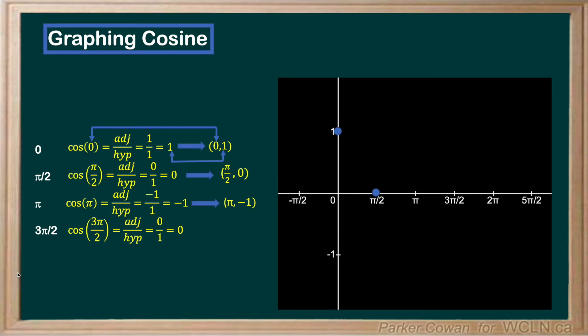Cos(π) gives us -1, giving us a point at (π, -1). And finally, cos(3π/2) gives us 0, giving us a point at (3π/2, 0).